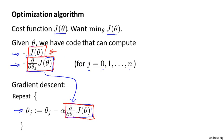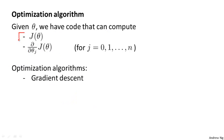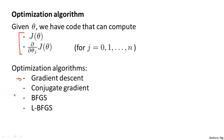For gradient descent, you don't actually need code to compute the cost function J of theta — you only need code to compute the derivative terms. But if you think of your code as also monitoring convergence, we'll think of ourselves as providing code to compute both the cost function and the derivative terms. So having written code to compute these two things, one algorithm we can use is gradient descent. But gradient descent isn't the only algorithm we can use. There are other algorithms — more advanced, more sophisticated ones — that if we only provide them a way to compute these two things, offer different approaches to optimize the cost function for us.